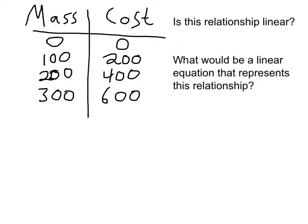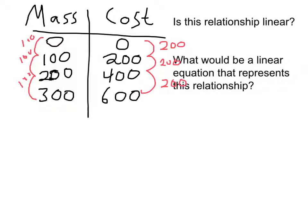So we're just going to look to see whether or not we have a linear relationship. As mass goes up, it goes up by 100 every time — I'm just going to write a little 100 to show you. This goes up by 100 every single time. And over on the cost side of things, it goes up by 200 every single time. So every time mass goes up by 100, cost goes up by 200. Mass always increases by 100, cost always increases by 200. Therefore, this relationship has to be linear.